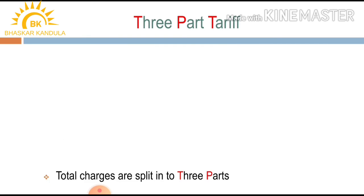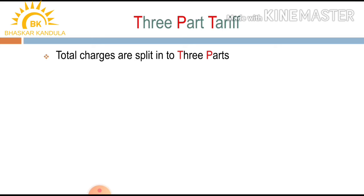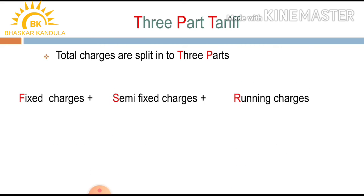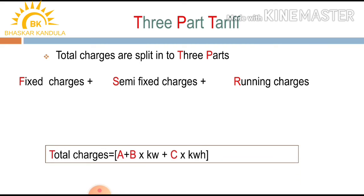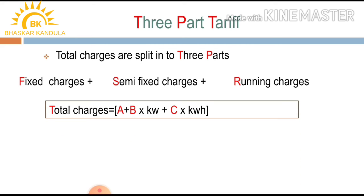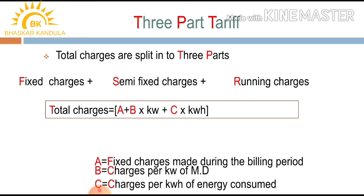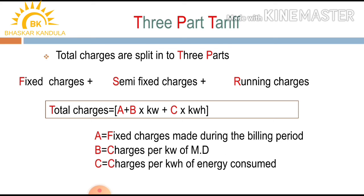In three-part tariff, the total charges are split into three parts: fixed charges, semi-fixed charges, and running charges. The expression is: total charges = a + b × kilowatt + c × kilowatt hour, where 'a' is the fixed charges during the billing period, 'b' is the charges per kilowatt of maximum demand, and 'c' is the charges per kilowatt hour of energy consumed.